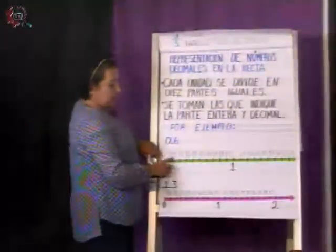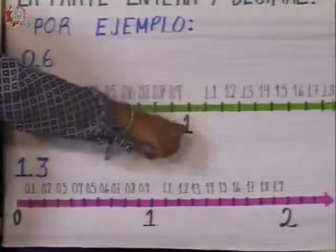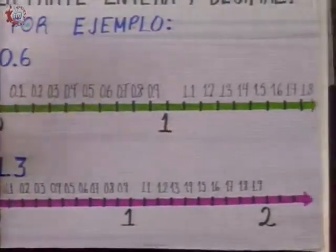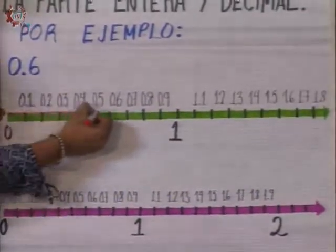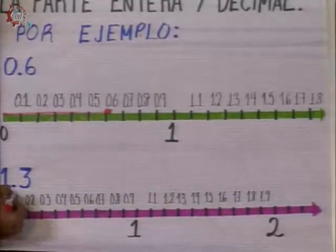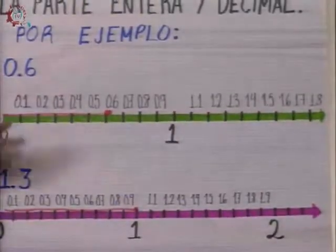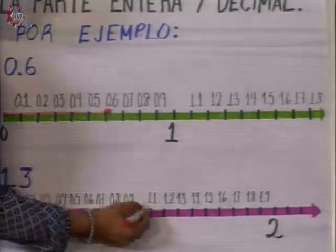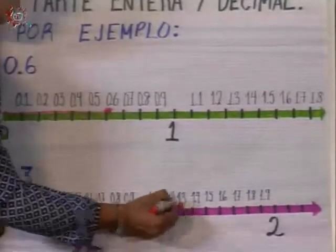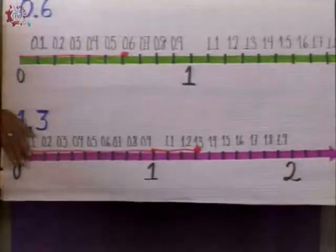Por ejemplo, tengo 0.6 — o seis décimos como lo leemos. Hago mi unidad y la divido en diez partes iguales: 0.1, 0.2, 0.3, 0.4, etcétera, hasta 0.9 y llego a la unidad. Procedo de la misma forma, me voy desde el 0 hasta el 0.6 y ahí es donde tengo ubicado mi número decimal. Cuando tiene enteros, se aplica lo mismo: parto del 0, me voy hasta el 1, previamente hice mi división en partes y luego agrego tres décimas. En este caso, aquí tengo ubicado mi número 1.3. Es muy sencillo: solo basta empezar con las reglas, hacer las divisiones y ya ir ubicando cada uno de los números.